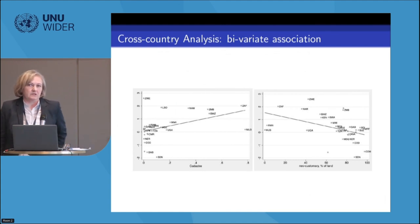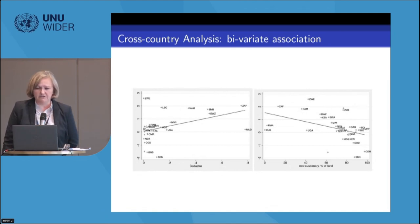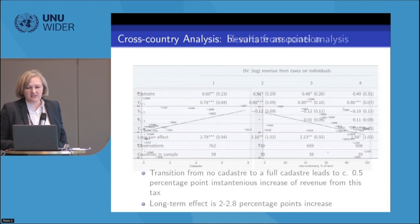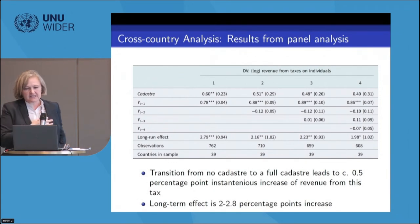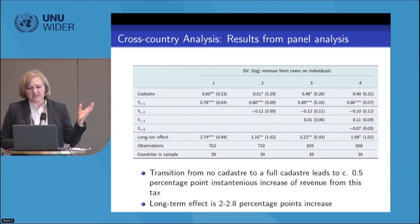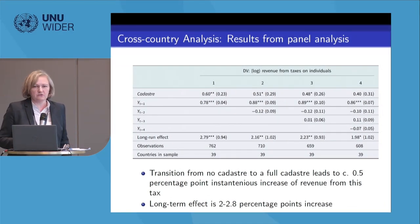A quick bivariate association shows that where there is a greater extent of cadastro, there is also a higher share of income tax revenue. The slope for neo-customary property rights as a percentage of land is even stronger. Running the regression analysis with four lags of the dependent variable, we find that the transition from no cadastro to full cadastro leads to about a half percentage point increase in revenue from individual taxes, and we calculate a long-run difference of 2.28 percent. So the magnitude is not super strong, but we do find a positive association.